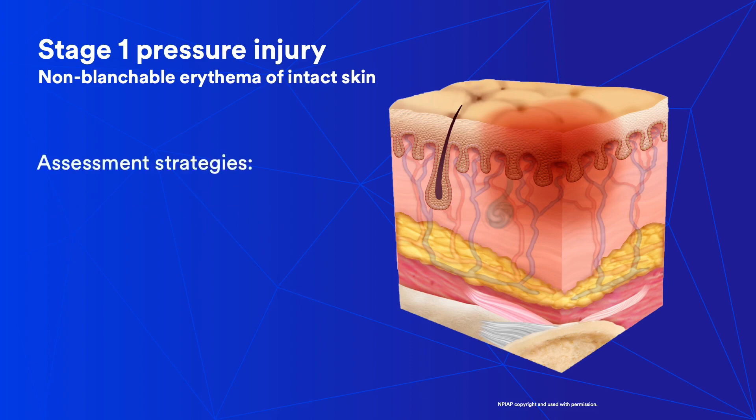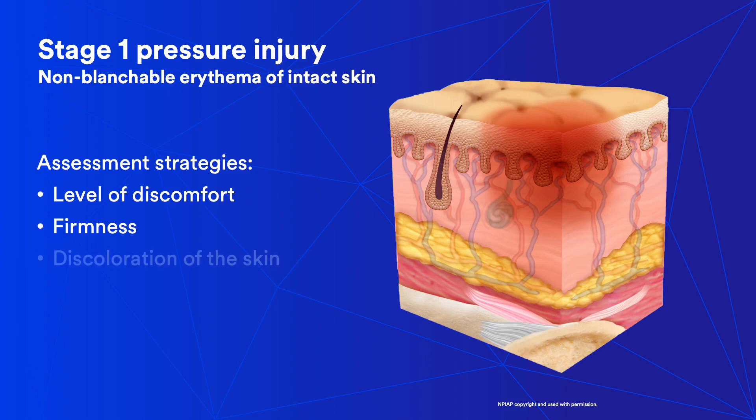Stage 1 pressure injuries may be difficult to recognize, especially in patients with dark-pigmented skin, because it can make reactive hyperemia challenging to determine. Consider other strategies, such as assessing discomfort, palpate for induration of firmness, and discoloration compared to surrounding skin, as those may also be indications of stage 1 pressure injuries.